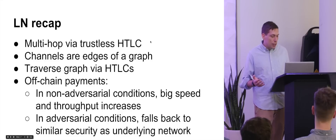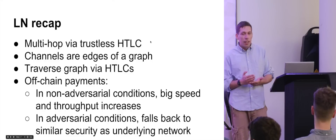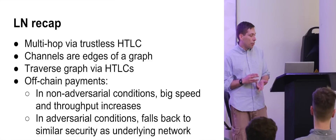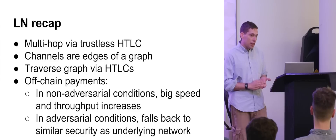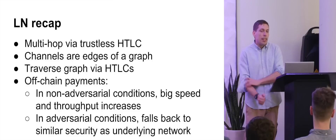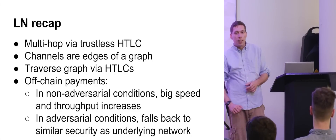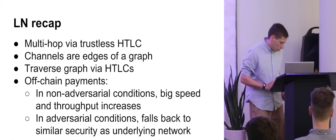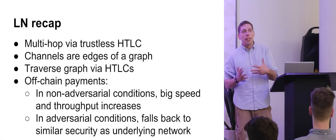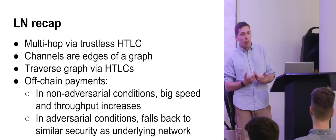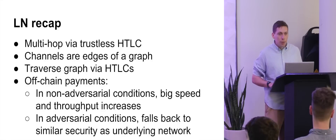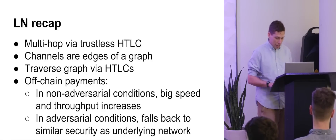You can have these off-chain payments, which in non-adversarial conditions — when people get along — give you big speed and throughput increases. In adversarial conditions, when people are being jerks, you fall back to somewhat similar security as the underlying network. As long as you're paying attention, you shouldn't lose any money. You're not trusting them. If things are fine, you can go a lot faster and more scalable. If someone is trying to take all your money, they still can't.